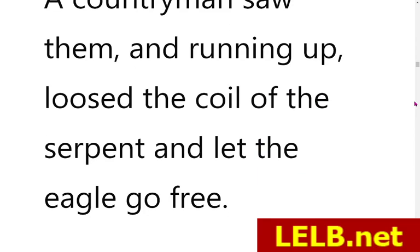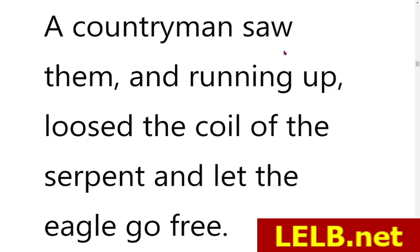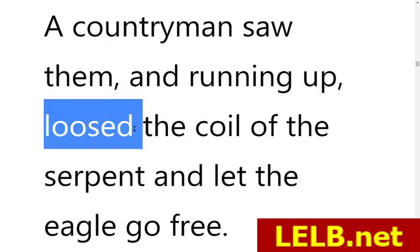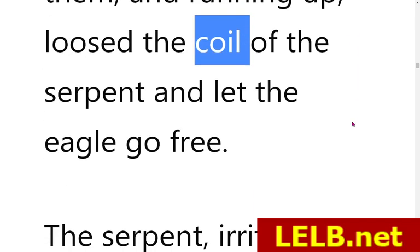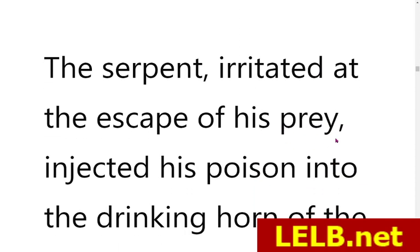And the countryman saw them, and running up, loosed the coil of the serpent and let the eagle go free. Running up loosed means released, and let go means set free. Coil means a ring or loop — it refers to the form of the serpent or snake. So a countryman saw them and came to the assistance of the eagle, released the eagle from the coils of the snake, and let the eagle go free.